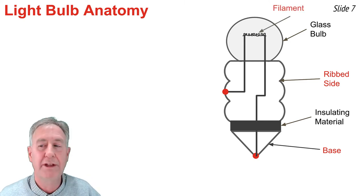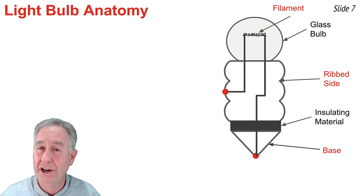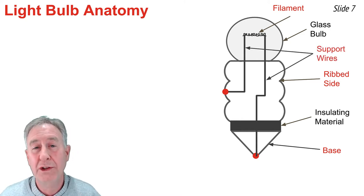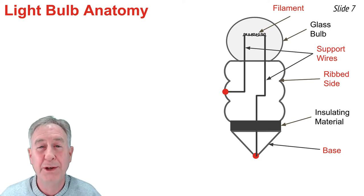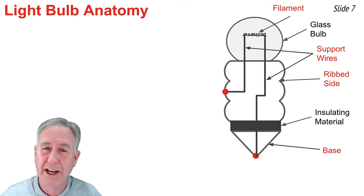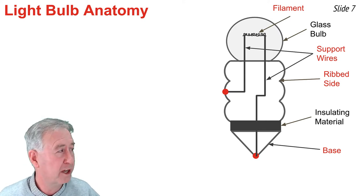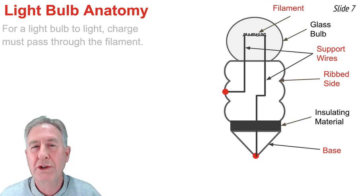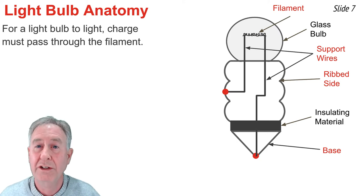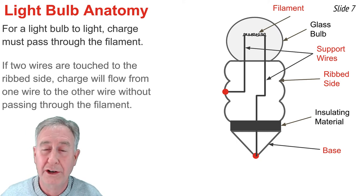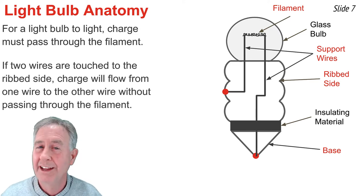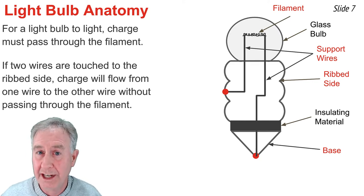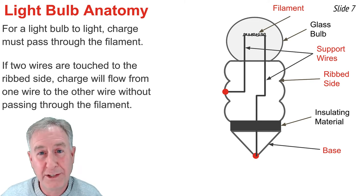Now inside that glass bulb is a filament — it's the one part of the light bulb that produces light. When charge flows through the filament, it gets hot and glows, and you have light. That filament is supported by two wires. One of the wires is connected to the rib side, and the other wire continues down without touching the rib side and touches the base of the light bulb. If you were to take two wires and connect both of them to the rib side, the light bulb will not light. Charge flowing in one of the wires will travel across the conducting rib side and out the other wire without passing through the filament.